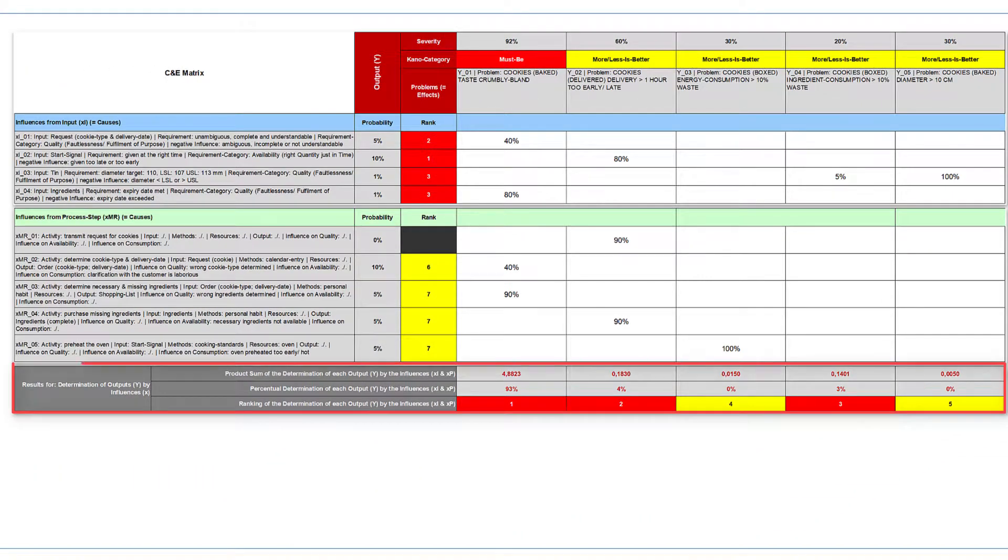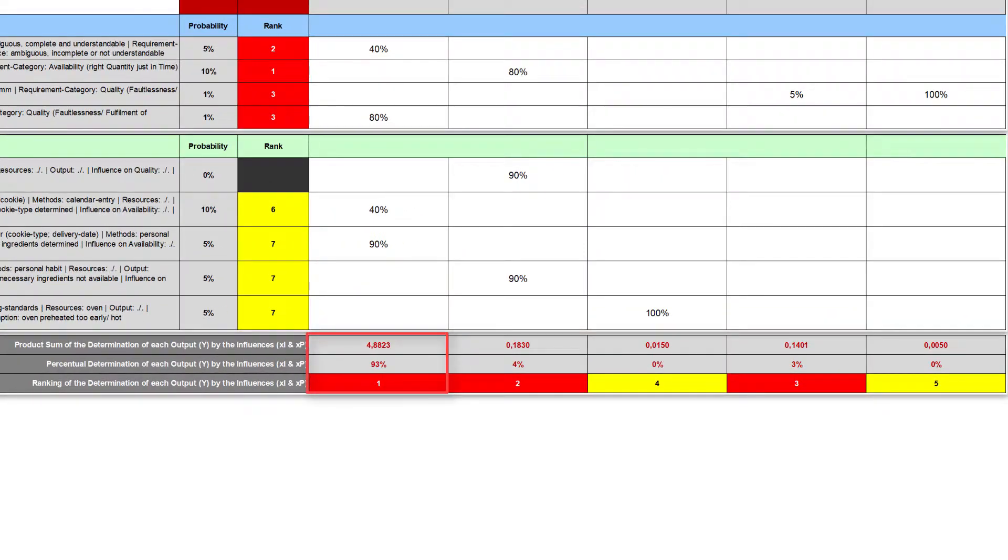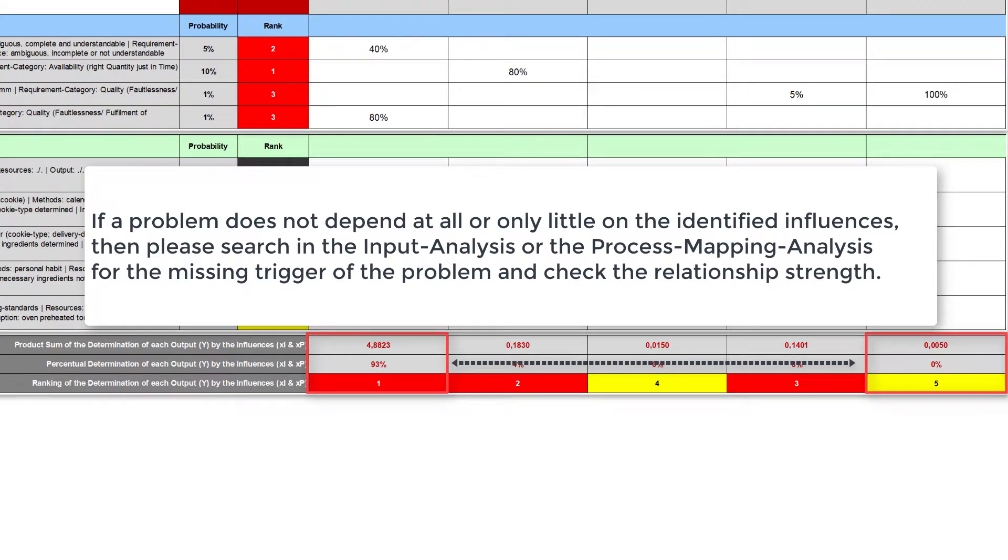The last three rows of the matrix show the overall determination of each problem by all influences. As with the influences, the product sum, the percentual determination, and the ranking is calculated for each problem. Here you can distinguish problems that are relatively well determined by influences from problems that are little or perhaps not at all determined by the listed influences. If so, you might go back to the input and process mapping analysis to look for the specific trigger of this undetermined problem.